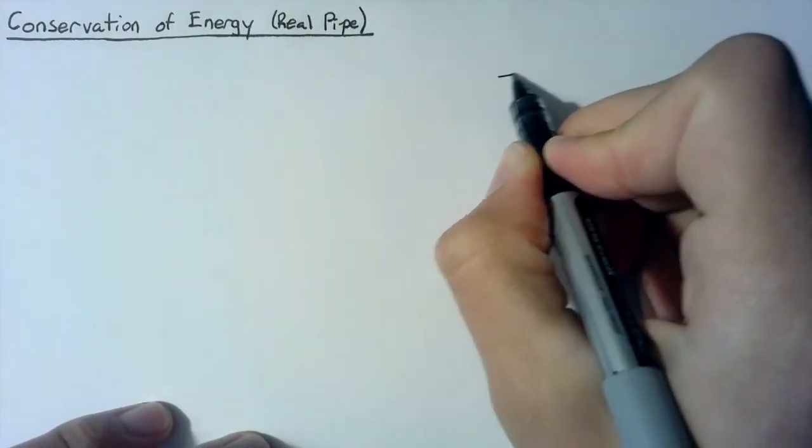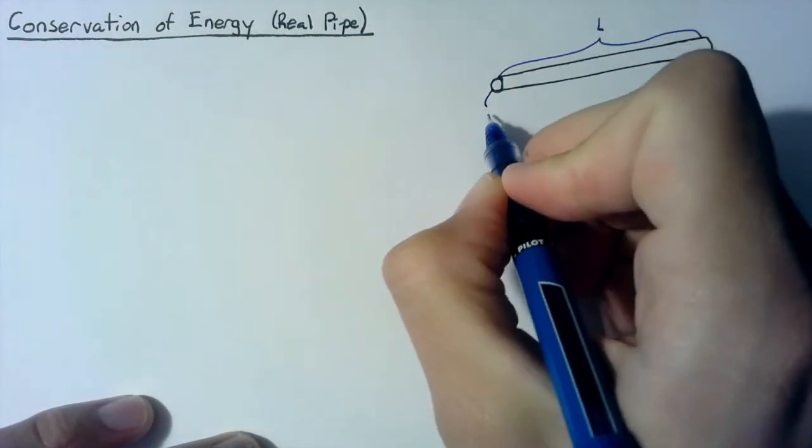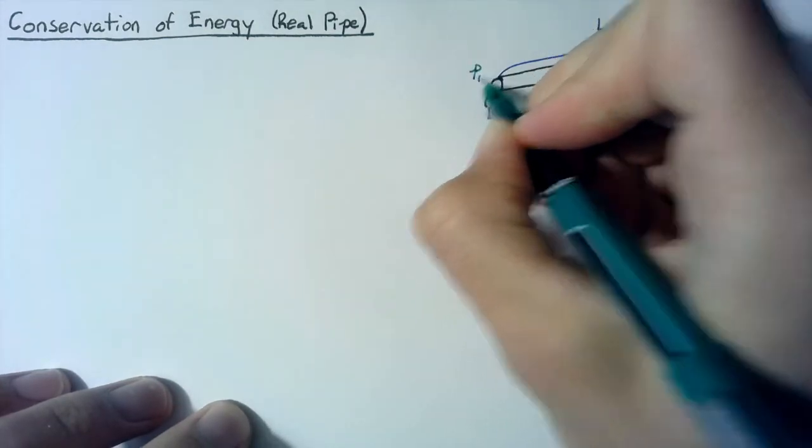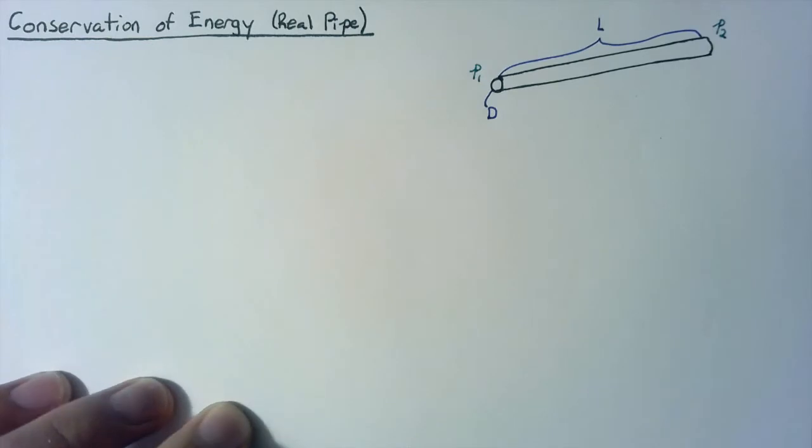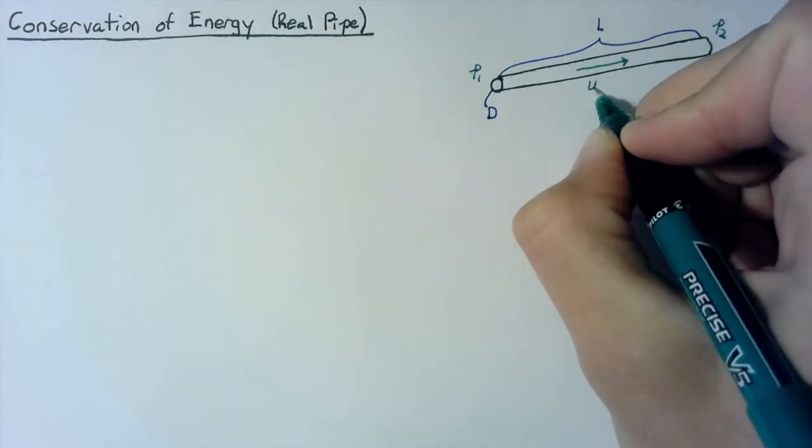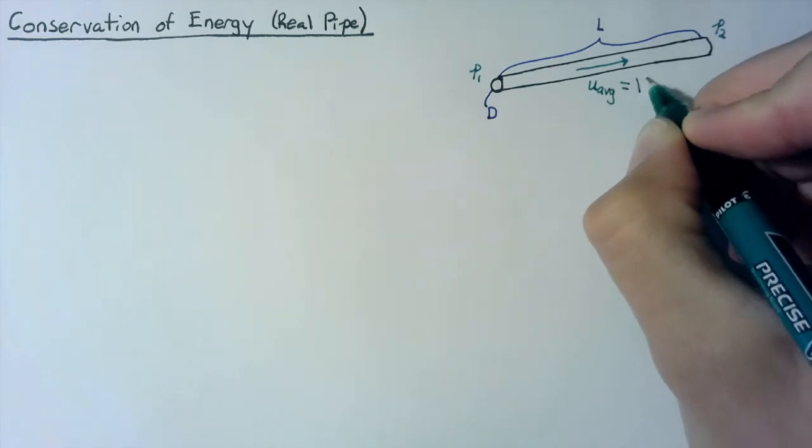To start with, let's look at the pipe we'll be dealing with. This pipe is going to have a length L, a diameter D, a change in pressure from end to end. On the left hand side we'll say it's P1, on the right hand side it's P2. And there's going to be some average velocity flowing through this, and we're going to call that average velocity just a capital V.